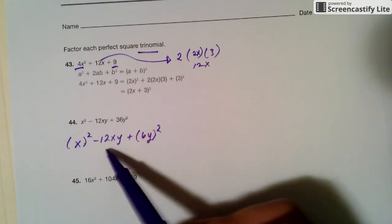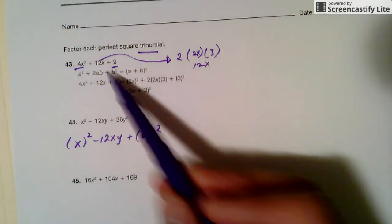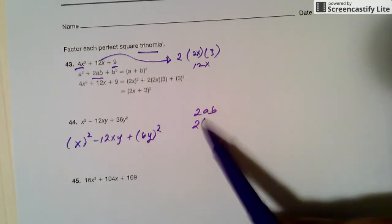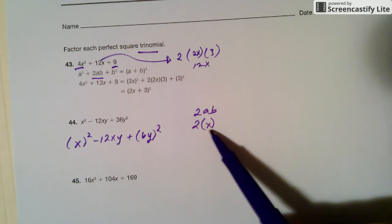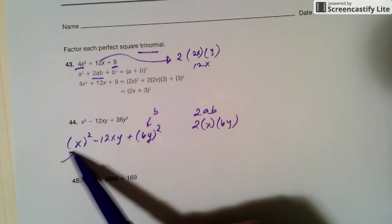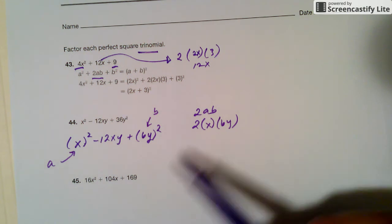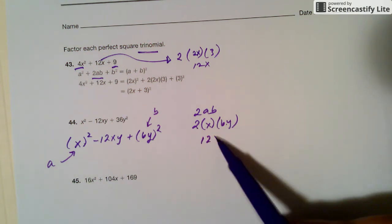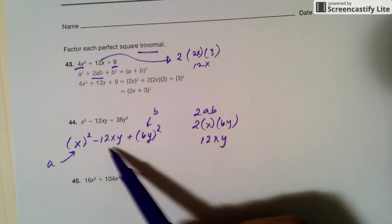And then this is just a check. So the rule was, in the middle, it has to be 2ab. So then 2a is x, b is 6y. This takes in the row of the b. That takes in the row of the a. And that ends up being 2 times 6, 12xy. Well, that's what we have over here. So it works out.